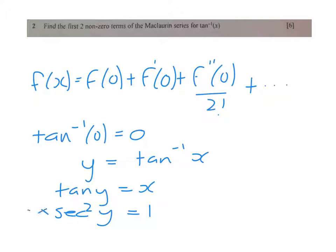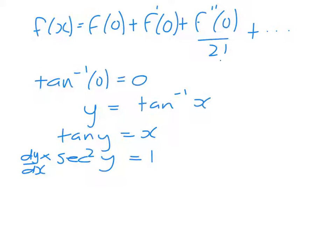And we have to remember to multiply by dy/dx because this is implicit differentiation. It gives us that dy/dx is 1 over sec² y, which is 1 over 1 plus x².